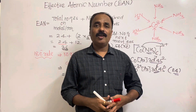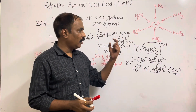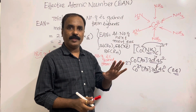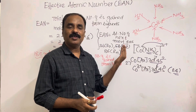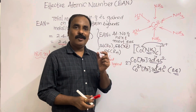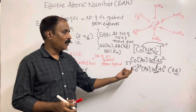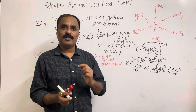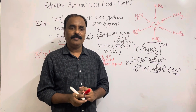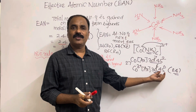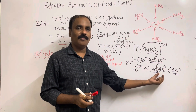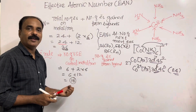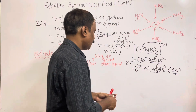To summarize the difference: in the EAN calculation, we consider the total number of electrons on the central metal or metal ion. In the 18-electron rule, we consider only the valence electrons. For Co³⁺ in the 3d block, valence electrons come from 3d and 4s: 3d has 6 electrons and 4s has 0, giving 6 valence electrons. Then 6 + 12 = 18.